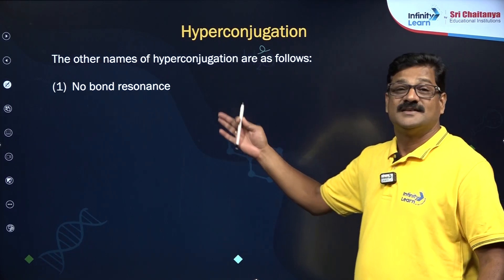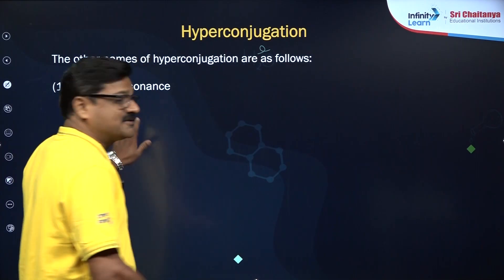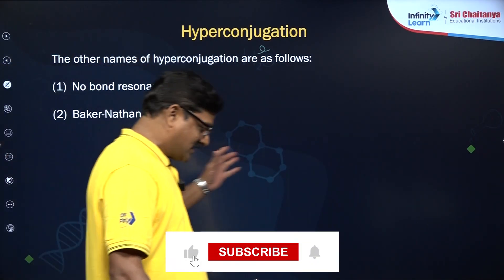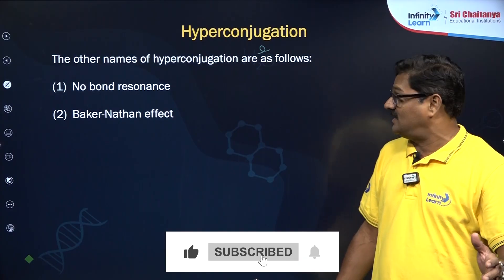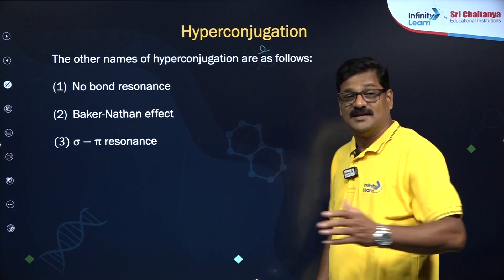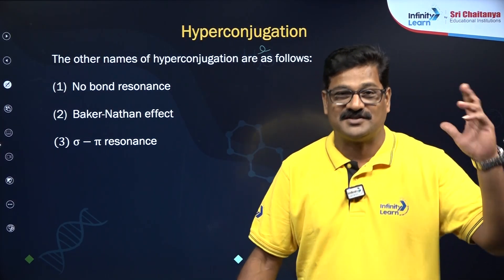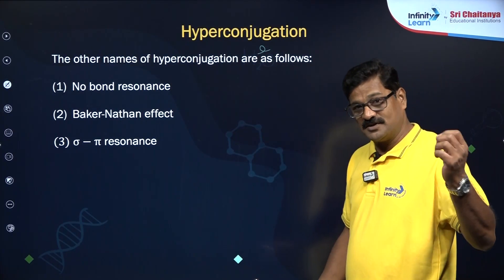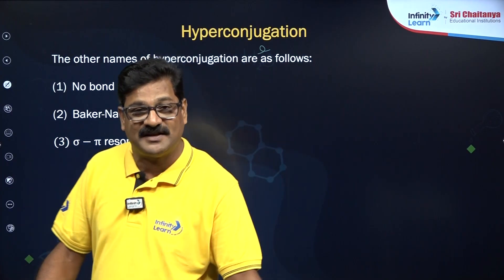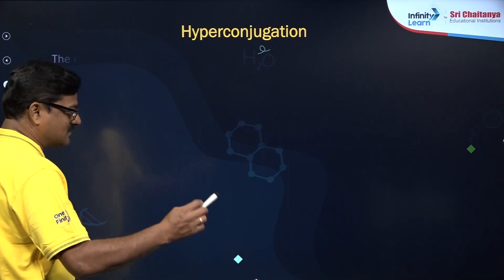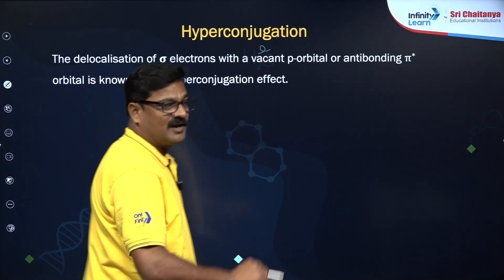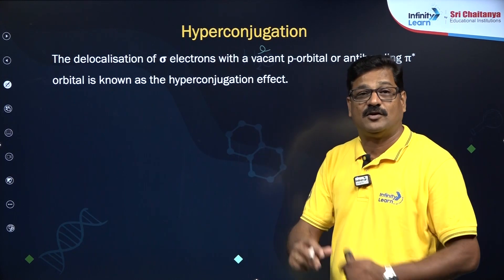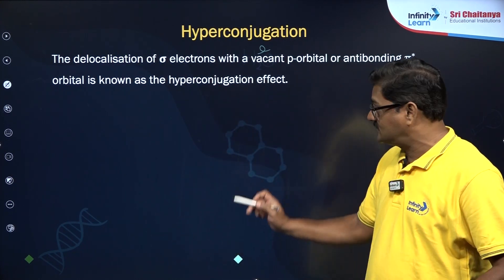Hyperconjugation is also called sigma-pi conjugation, also said to be no-bond resonance, and also called the Baker-Nathan effect. What is hyperconjugation? It is a delocalization of the sigma electrons with the pi electron system.